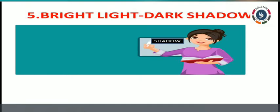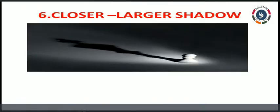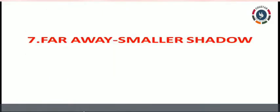Shadows are dark irrespective of the color of the light or the object, so we cannot identify any color in shadows — it will always be dark. The closer the source of light to an object, the larger the shadow. The farther the source of light from an object, the smaller the shadow.